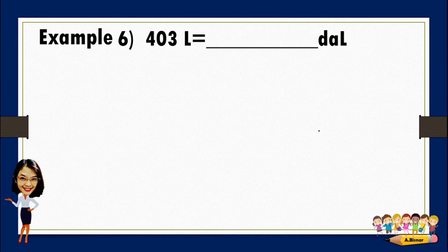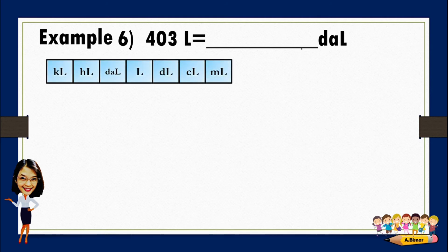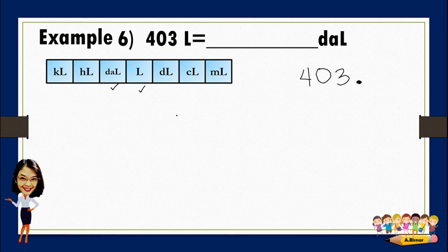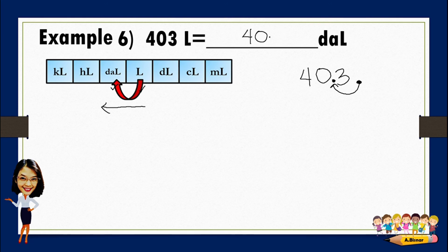For number six, convert 403 liters to decaliters. We write the given: 403. Since this is a whole number, the decimal point is at the right side of the last digit. From liters to decaliters there is only one movement, but as you observe the movement is to the left. So we move the decimal point to the left once. The answer is 40.3.